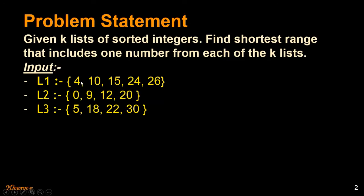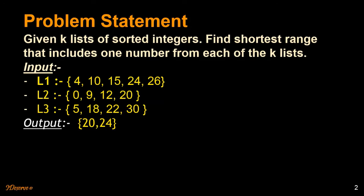If we have a range of 0 to 5, it will include 4, 5, and 0, and the length of that range will be 5. But the shortest range that includes at least one digit from each of the lists is 20 to 24 — it includes 20, 22, and 24.